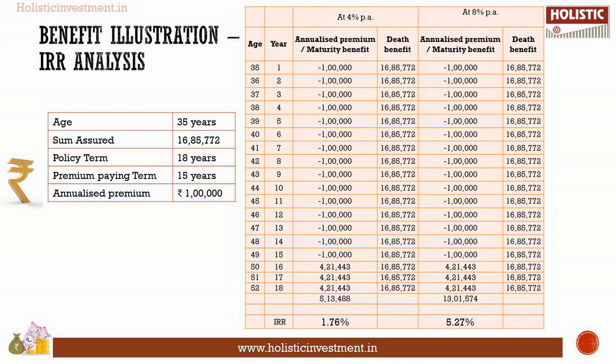Mr. A, aged 35 years, wants to plan for his son's graduation, who is currently three years old. He invests rupees one lakh per annum in the Max Life Future Genius Education Plan. He chooses the limited pay variant with a policy term of 18 years, and mode of premium payment as annual. His premium payment term is 15 years and the sum assured is rupees 16 lakh 85,772.